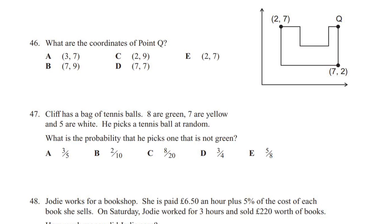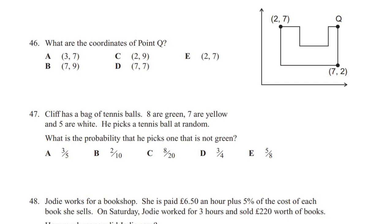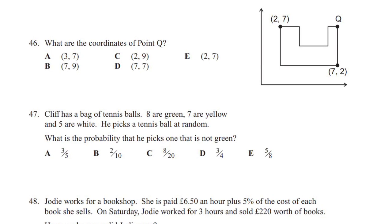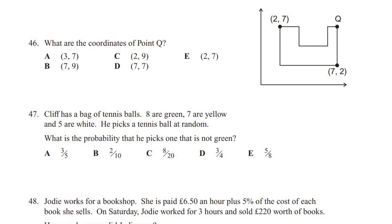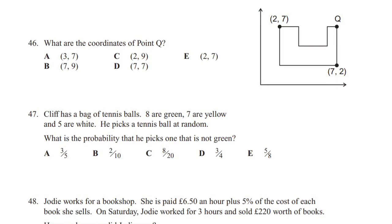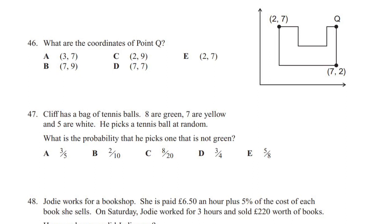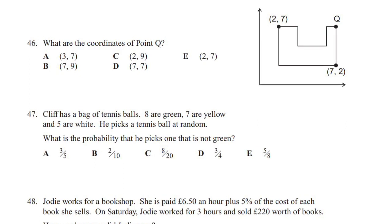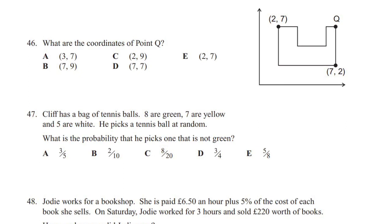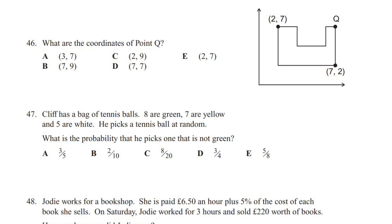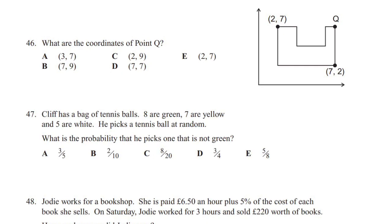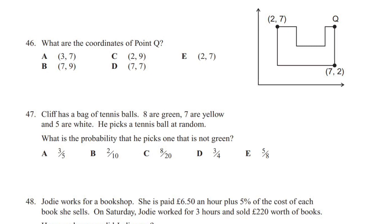However, when you look at the answers, 12/20 does not feature on the list. So we need to simplify it. You can do this by dividing by two to get 6/10. And if this still doesn't work, which it doesn't in this example, you can halve it again to get 3/5. Therefore, giving you an answer of A, 3/5.